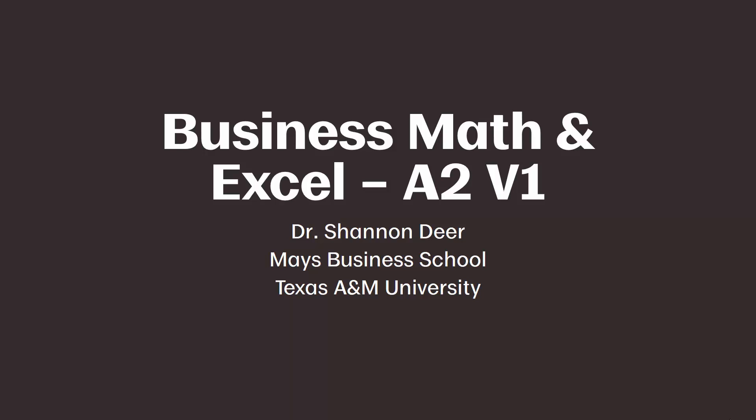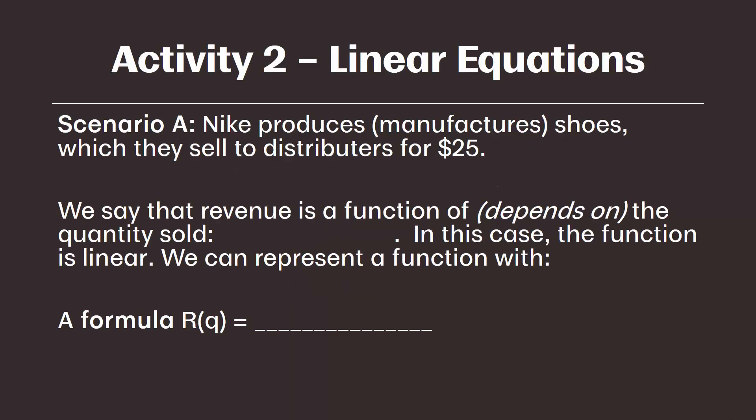Let's dive into your example. Make sure you have your note packet open to Activity 2, linear equations. We're dealing with an example with Nike. It says Nike produces — which just means manufactures — shoes, which they sell to distributors. Think of a distributor as Academy, for $25. Academy will then mark up that shoe and sell it for a lot more. But let's think about what Nike actually gets when they sell the shoe to Academy. When we talk about revenue in mathematical terms, we say revenue is a function of the quantity sold.